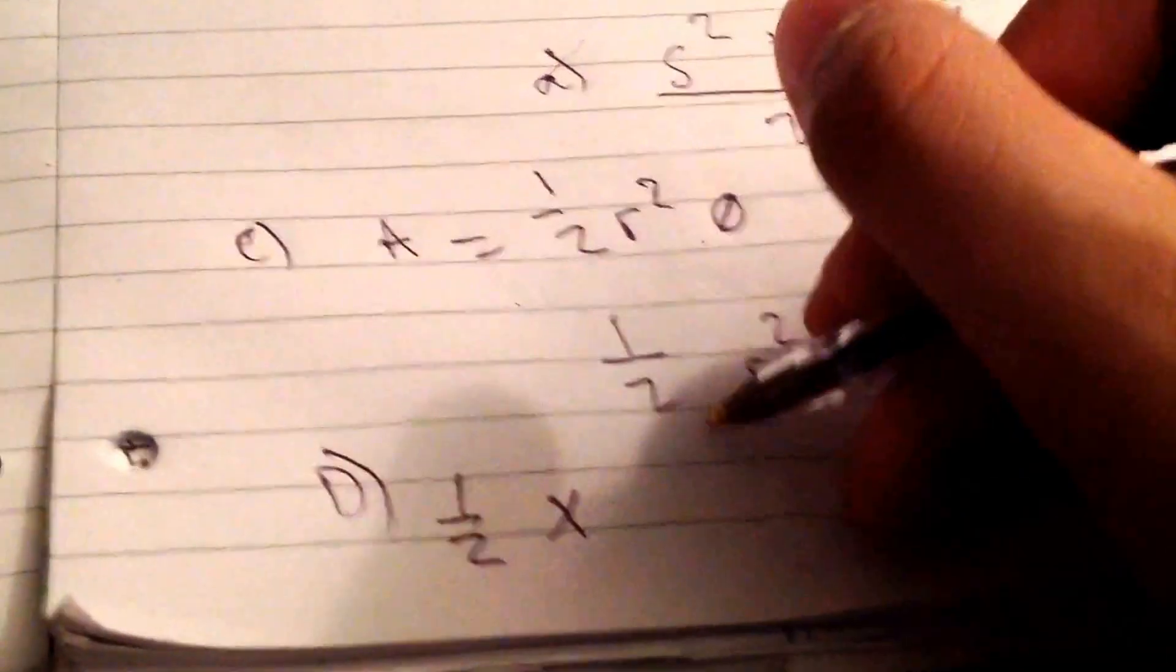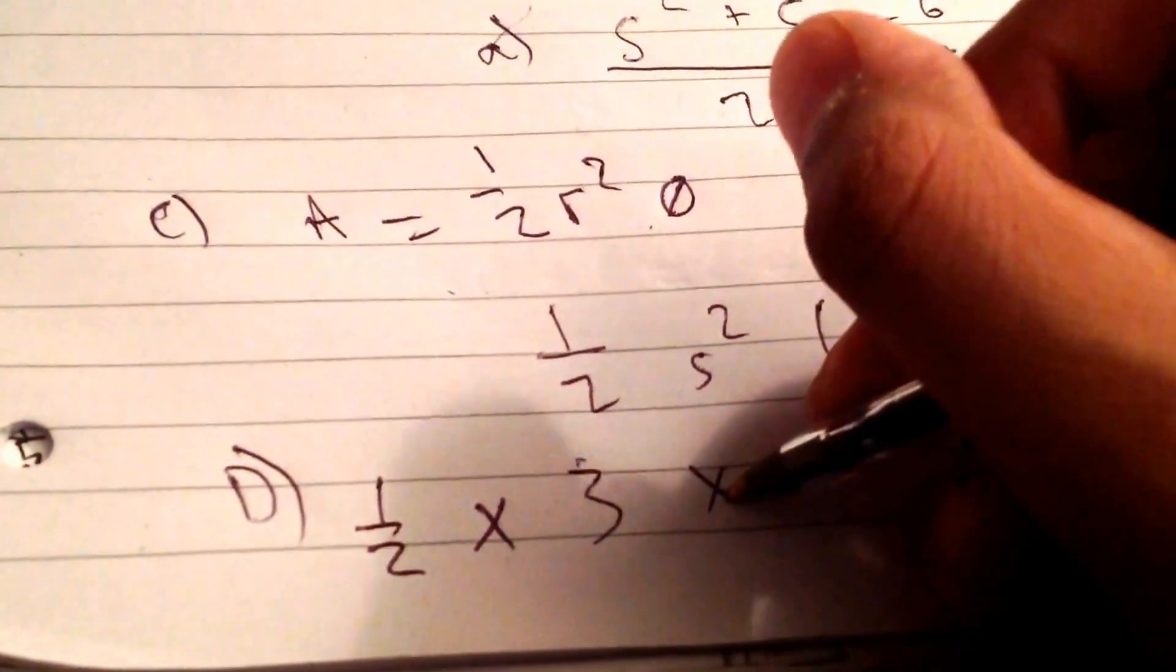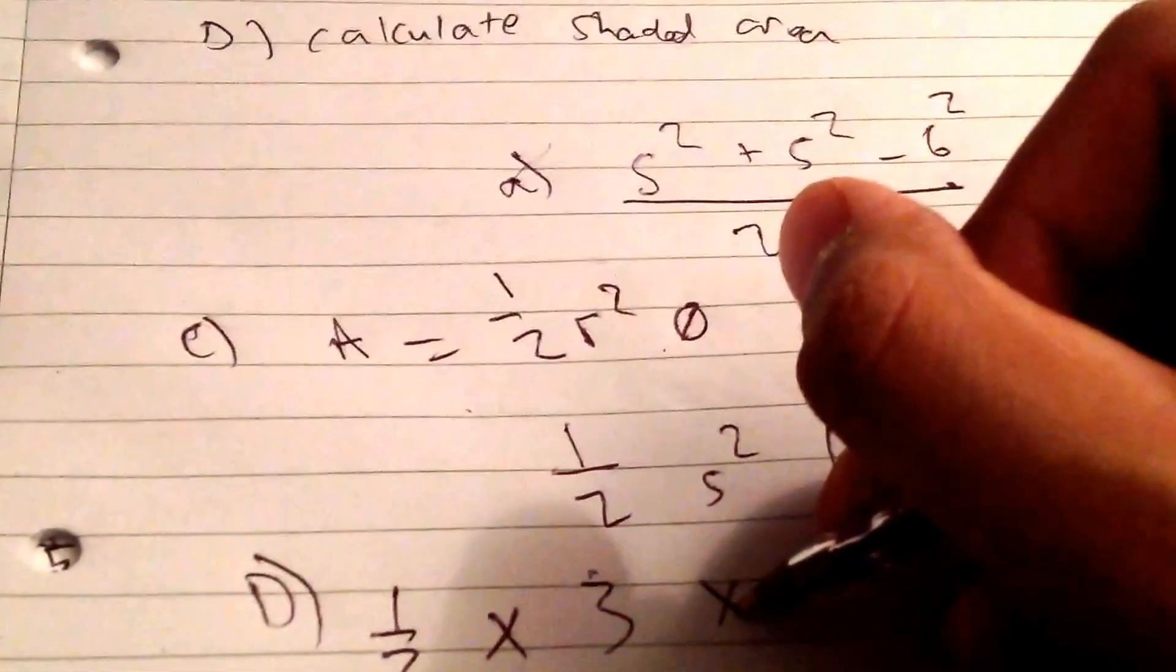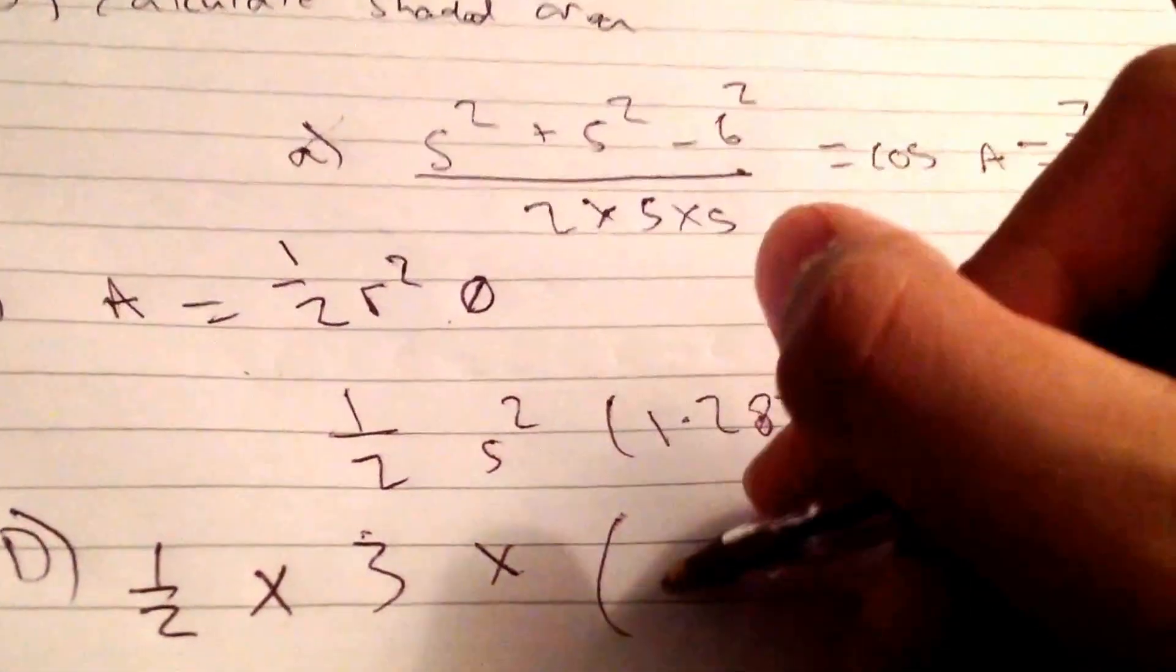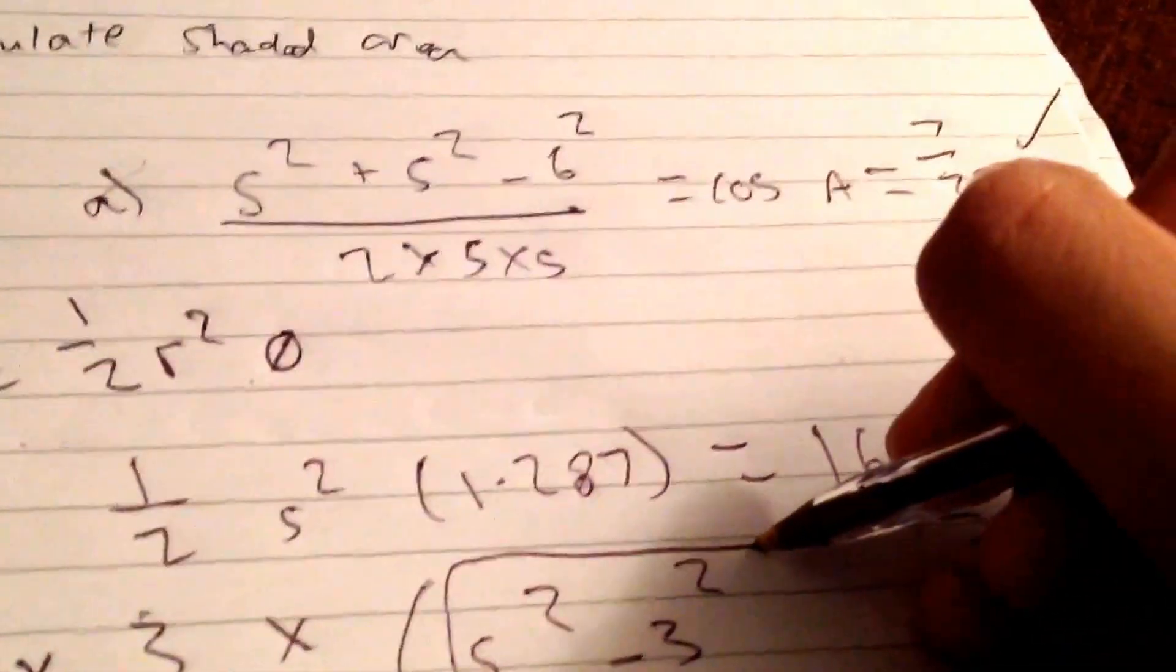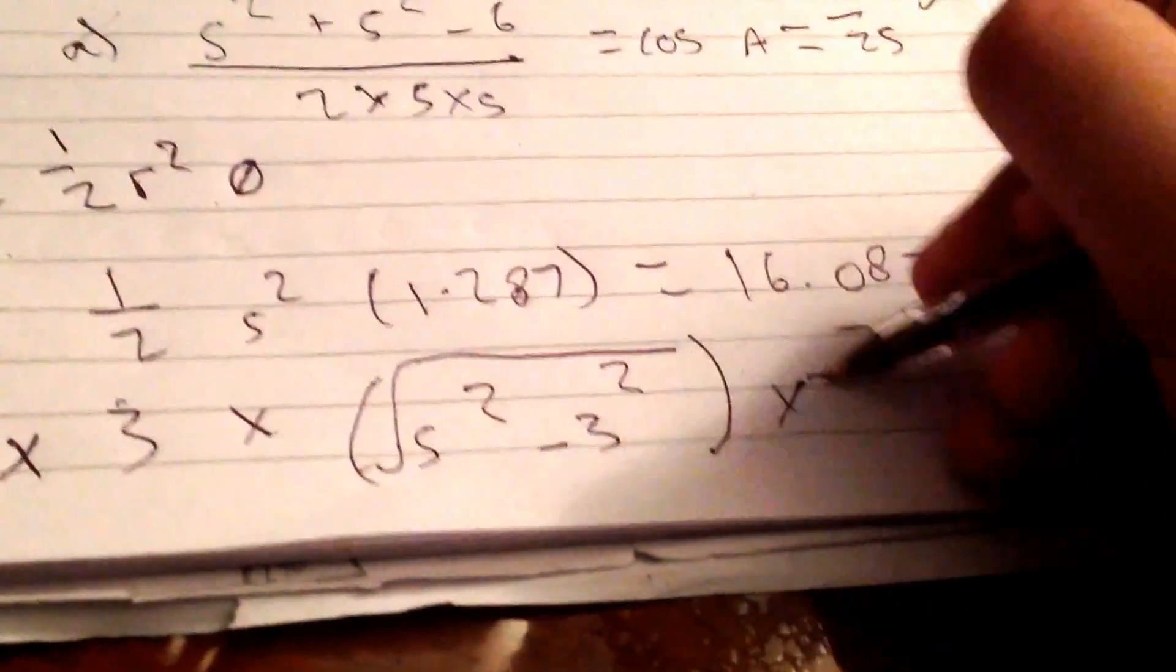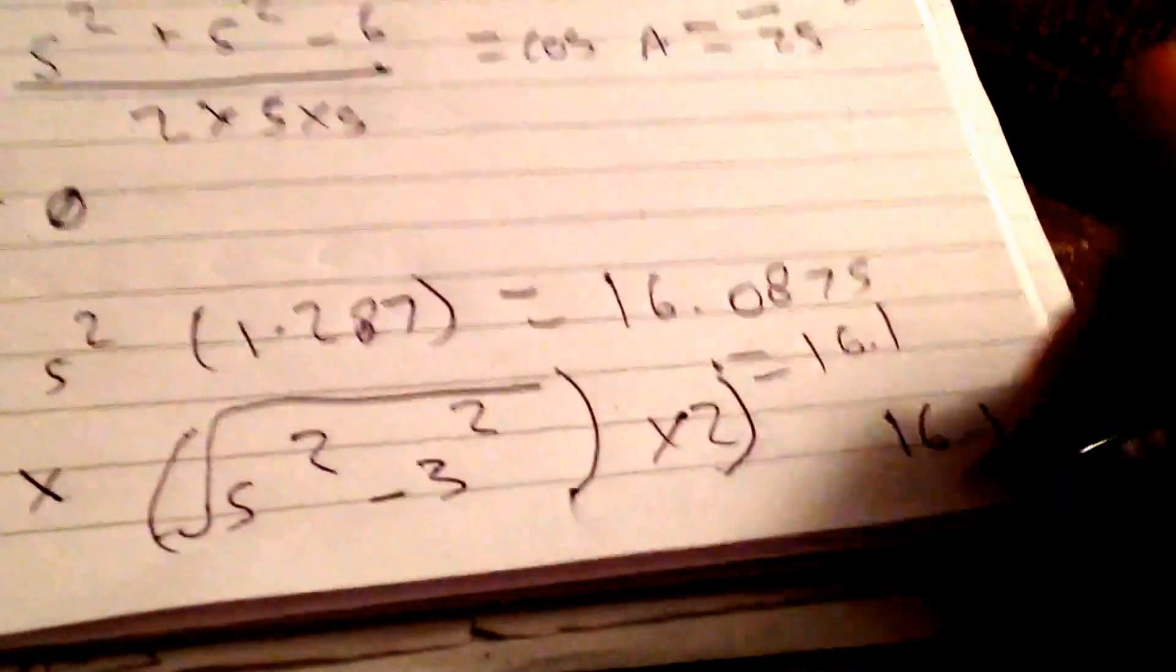Oh, but we don't know the distance, do we? We can work that out. So that's going to be three times—then you want to do five squared minus three squared, square rooted. I believe that's going to equal four. Then you want to times all that by two.